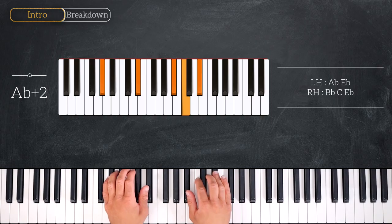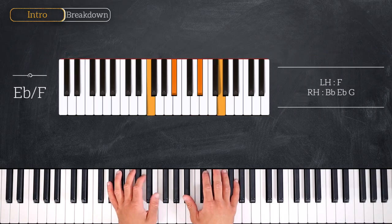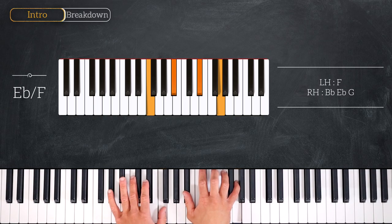Following this chord we'll play this Eb over F, playing F on the left and Bb, Eb, G on the right.